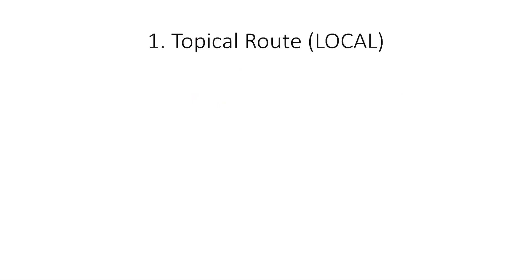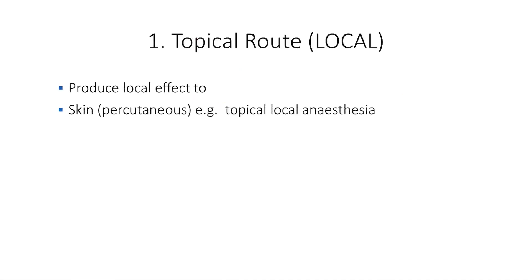Let's start with the first, that is the topical route. We can produce local effects at different places in the body. The basic example is the skin — we apply some drugs onto the skin. For example, topical local anesthesia: lignocaine gel, which we apply on the skin to produce topical anesthesia. That is a good example.